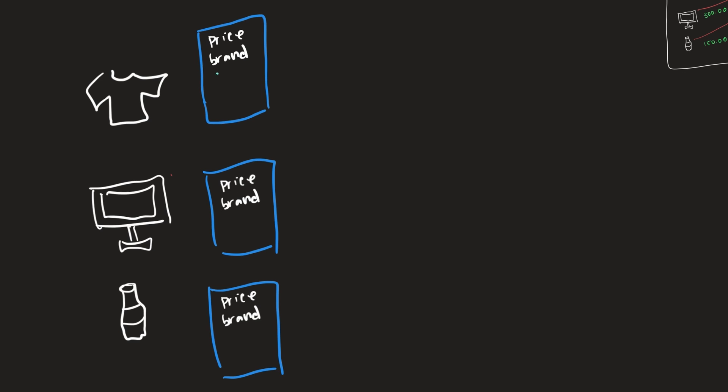For example, a shirt might have size and color, a monitor will have size and resolution, and wine will have the year and the type of wine. Now, like most things in the engineering world, things aren't always this simple. There's always some edge case or business logic that throws a wrench in the simplicity. For instance, maybe there's a specific tax for alcohol, a specific tax for electronics like a recycling fee, and maybe clothes are on sale for 20% off. In a scenario like this, it won't be as simple as just getting the base price — we'd need to calculate those taxes or sales into the actual price.